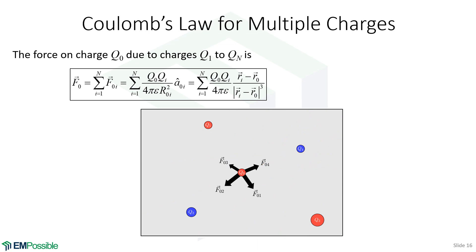In the end, we've just calculated four different forces as if each one of those charges — Q1, Q2, Q3, and Q4 — were alone. When we add all of these together, we get an overall force on that charge Q₀. Now this can be very tedious to do, but it is very simple — we just calculate the force due to each separate charge individually and then add them up. That is called superposition.